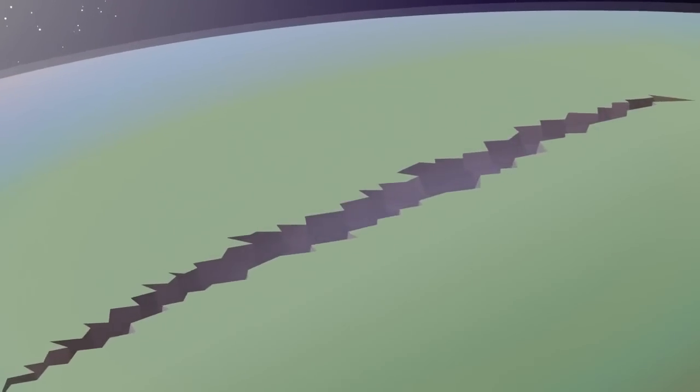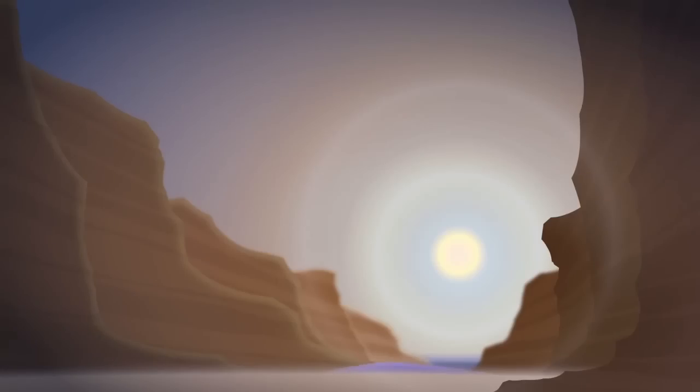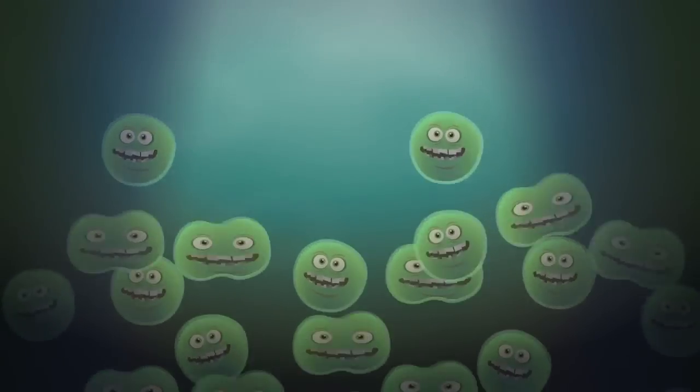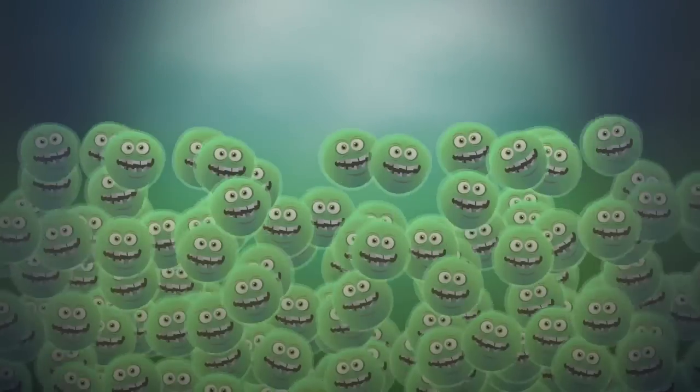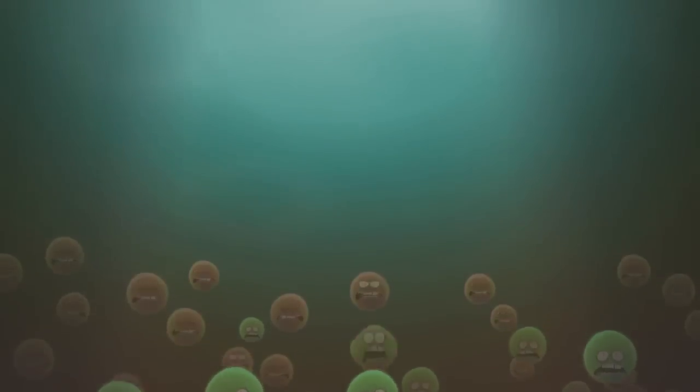The continents were drifting apart, opening huge rifts in the Earth's crust. They flooded, becoming seas. Algae thrived in the extreme heat, poisoning the water. They died, and fell in their trillions to the bottom of the rifts.